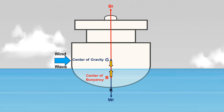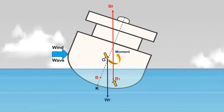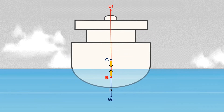When the ship is heeled by some external forces such as wind and waves, the weight force and the buoyancy force get separated. The center of buoyancy moves to the low side from B to B1, while the center of gravity remains at the same position as long as there is no movement of weight on board. When the external forces are removed, the ship will return to upright condition due to the forces acting through G and B1.